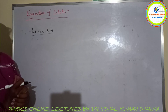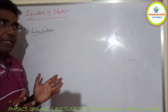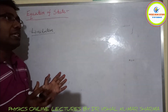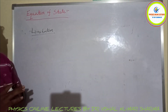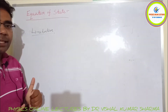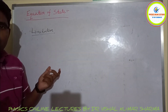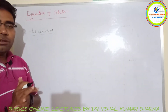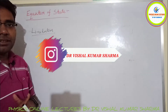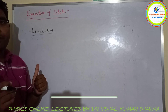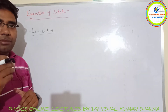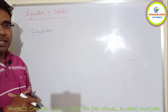In this lecture we discussed the equation of state, state variables, and certain limitations. We illustrated the concept with two examples: the ideal gas equation and the van der Waals gas equation. I hope you have understood. We will meet in the next lecture — keep subscribing, take care, and thank you.